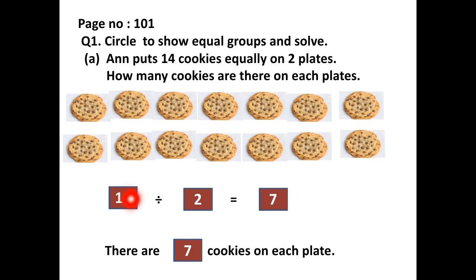First we write 14. Then we write how many plates are there - 2. How many cookies are there on each plate? 14 divided by 2 equals 7. There are 7 cookies on each plate.